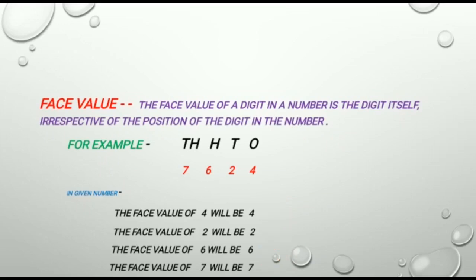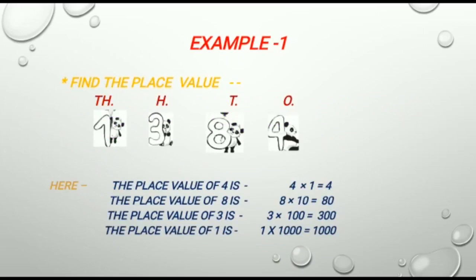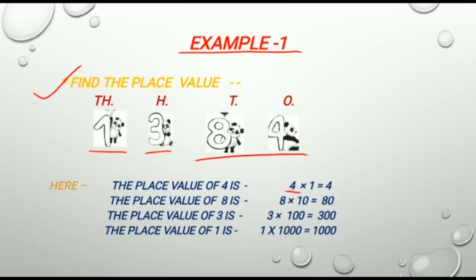Let us take some more examples based on place value and face value. Example 1: Find the place value of the digits in 1384. Here the place value of 4 is 4 multiplied by 1 is equal to 4.